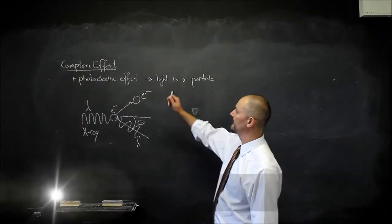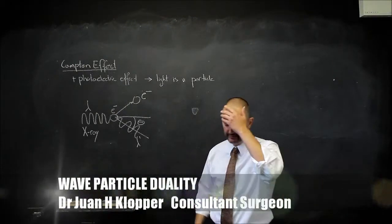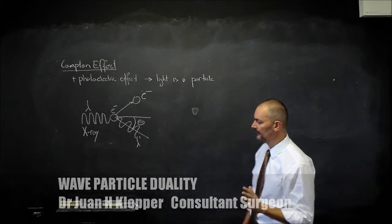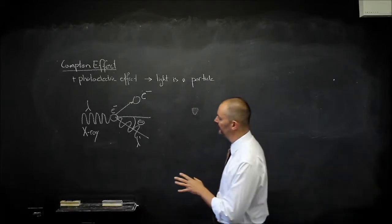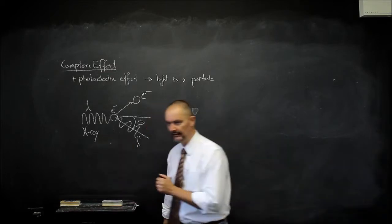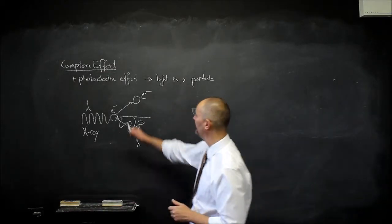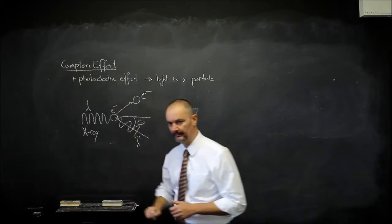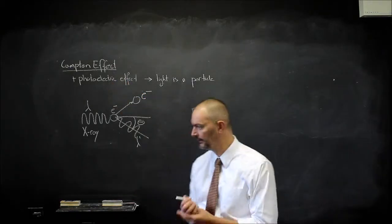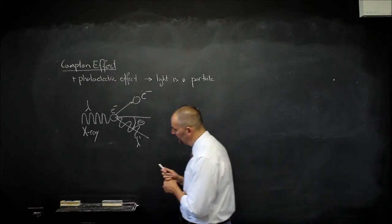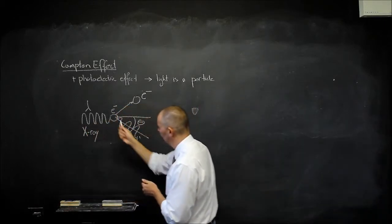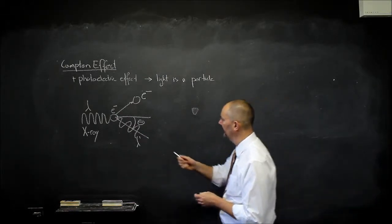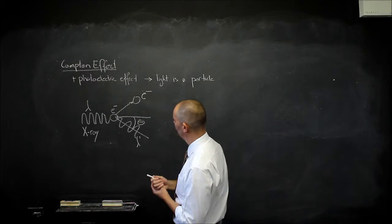Einstein wrote about the photoelectric effect already in 1905, but it was only in the 1920s that it really became evident that photon light is also a particle. What added to this photoelectric effect was the Compton effect by Arthur Compton. He showed that if he had an incident X-ray and it struck a free electron in graphite, the electron recoils in a certain direction.